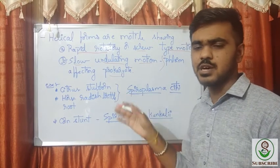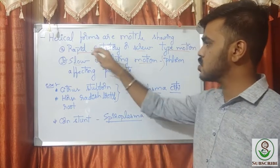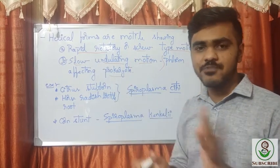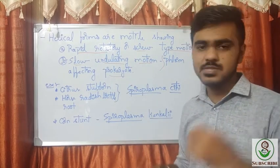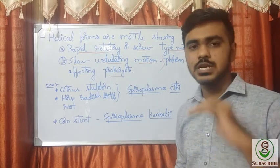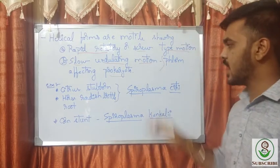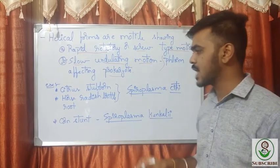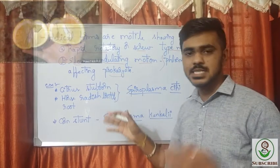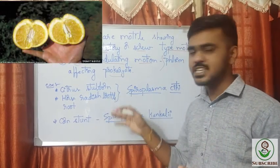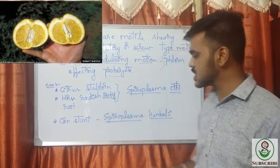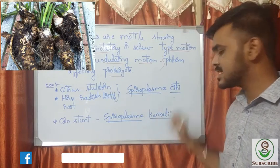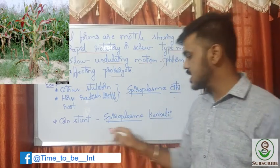All spiroplasmas are phloem-affecting prokaryotes. They show two types of motion — one very fast and rapid, another slow and undulating. The best examples of diseases caused by spiroplasma are citrus stubborn disease and horseradish brittle root, both caused by Spiroplasma citri, and corn stunt disease caused by Spiroplasma kunkelii.